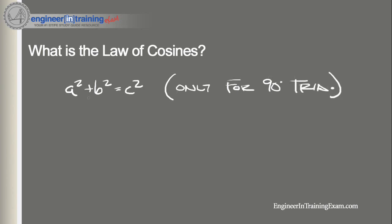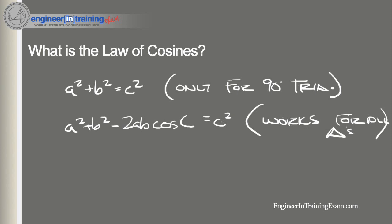Now the Law of Cosines is a squared plus b squared minus 2ab cosine of the angle c, which is equal to c squared. And this works for all triangles. If you plugged in 90 degrees right here to make this a right triangle, this whole term would disappear making it the Pythagorean theorem. So that's basically just how you can a quick way you can remember what the Law of Cosines is.